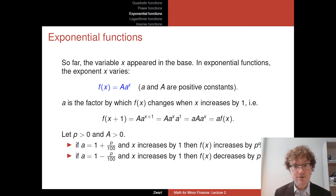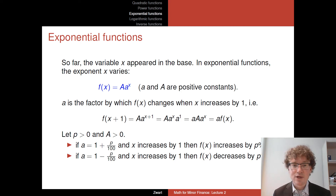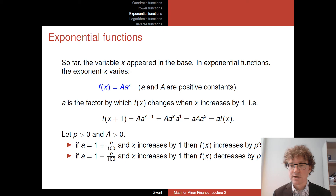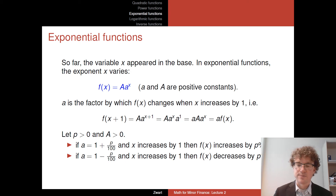If p is negative, then a equals 1 − p/100, making a slightly less than one. The function value then decreases by p percent — as with a negative interest rate or discounting.